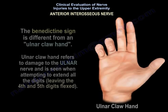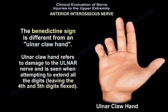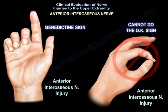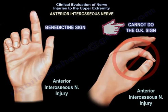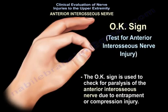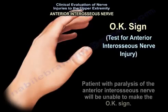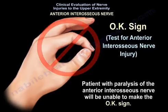Hand of benediction is different from ulnar claw hand. Ulnar claw hand refers to damage to the ulnar nerve and is seen when attempting to extend all digits, leaving the four and five digits flexed. For the OK sign, the patient is asked to touch the tip of the thumb and index finger together; if the digits cannot flex because of weakness of the anterior interosseous nerve, the patient cannot perform the OK sign.